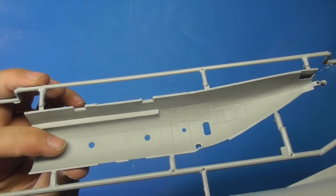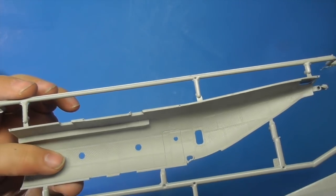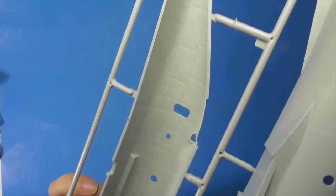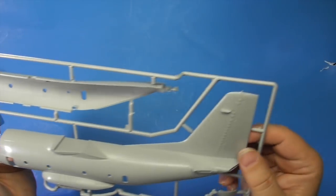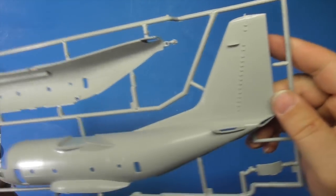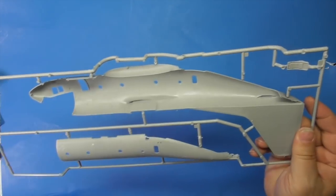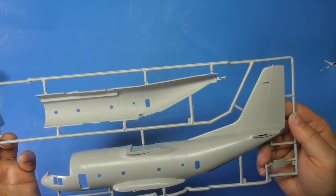Inside the fuselage you've got a separate bulkhead with all that nice soundproofing detail in there and those fins on the tail. This will just pop in there and give you some nice detail. Hopefully you can have the back open to show that detail.